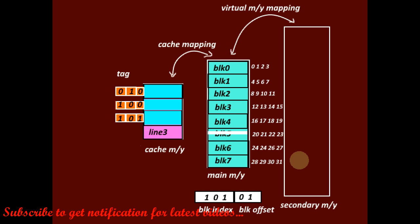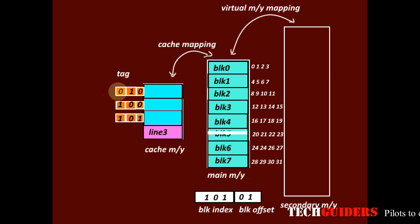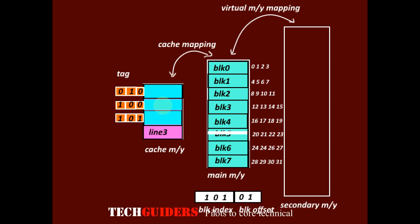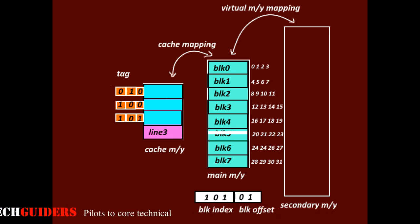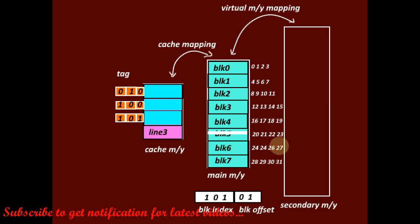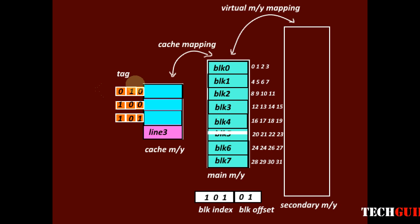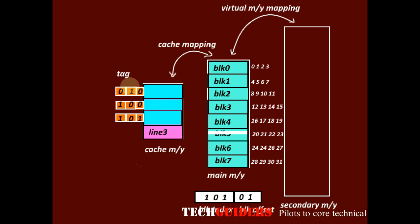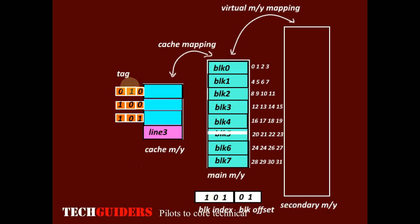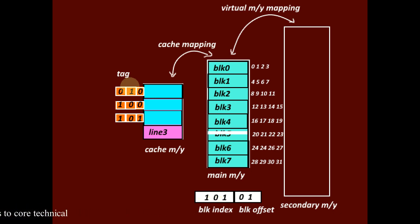The major limitation of associative mapping is that we need to compare the block index with each and every tag associated with all cache lines, which is costly. A minor limitation is that the number of tag bits is small, since only the block index is used as the tag, compared to other mapping methods.